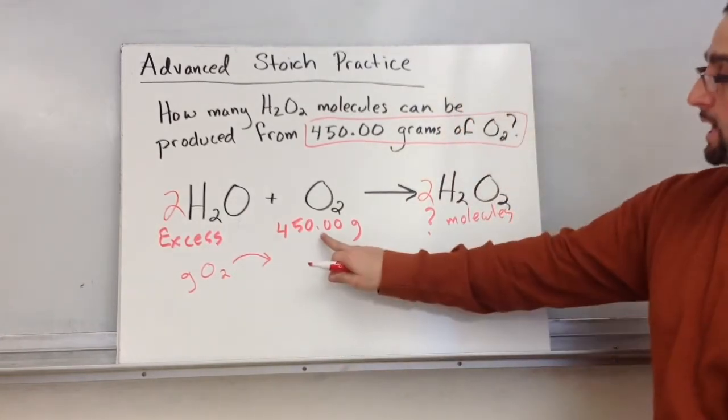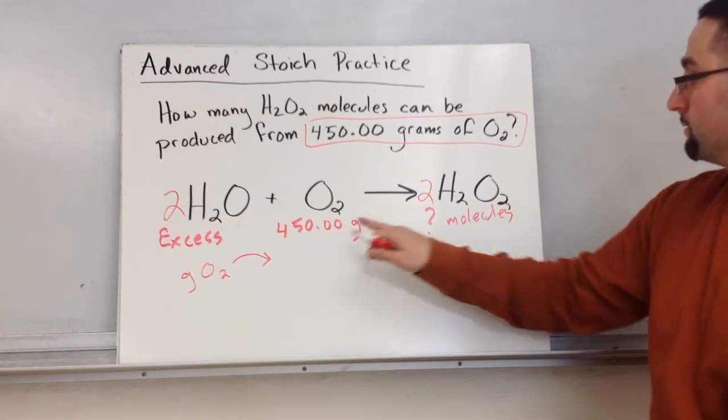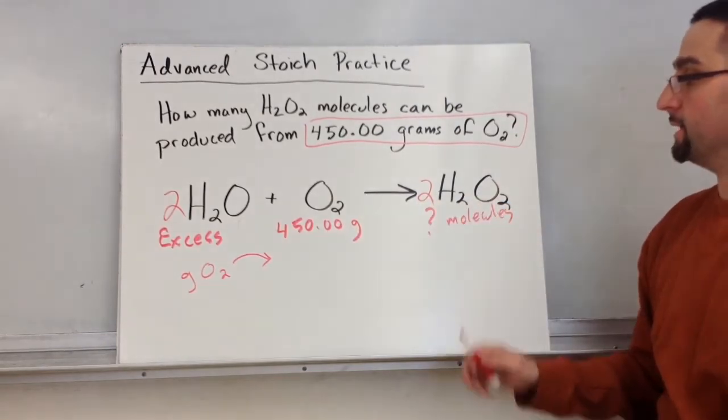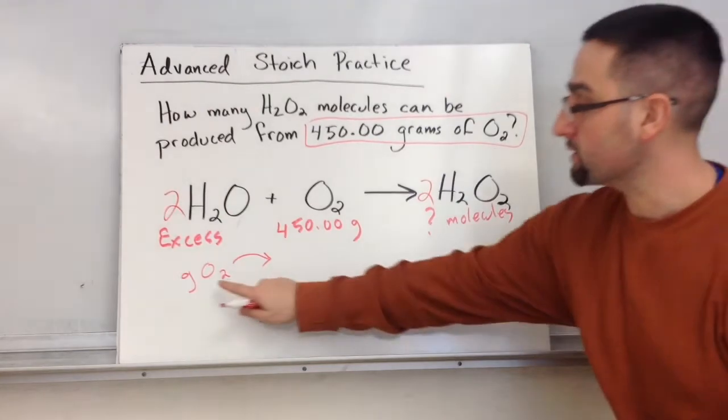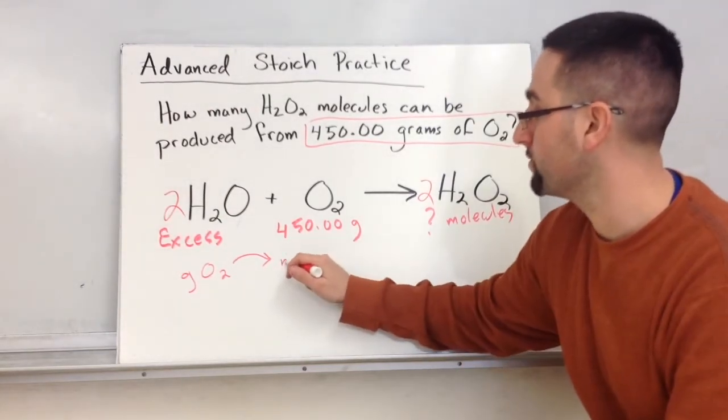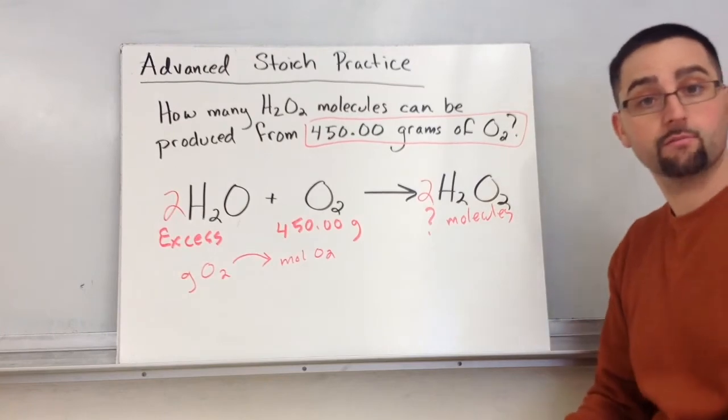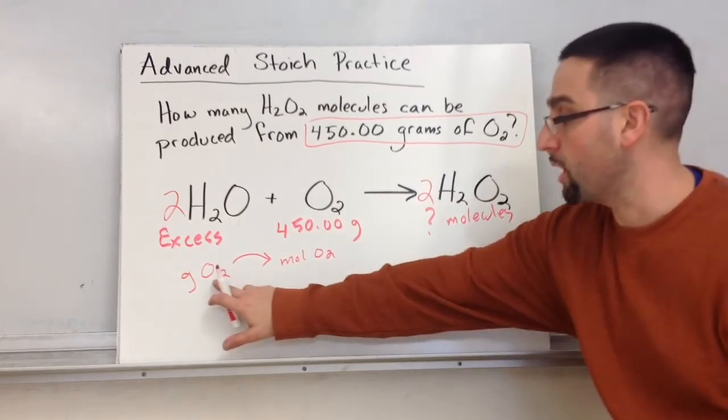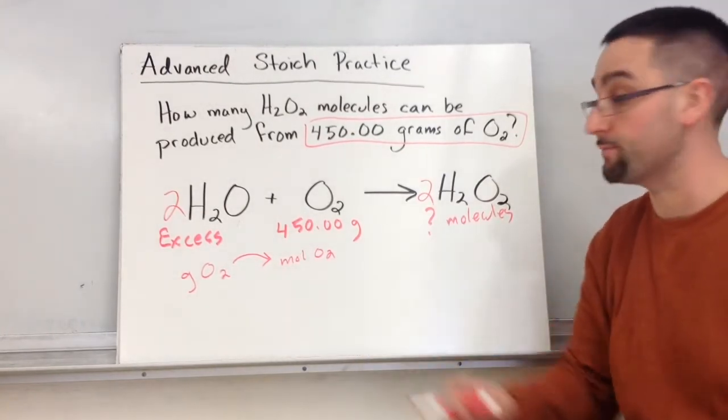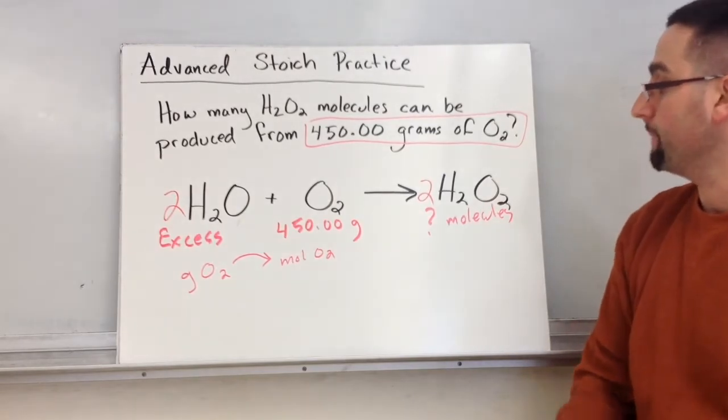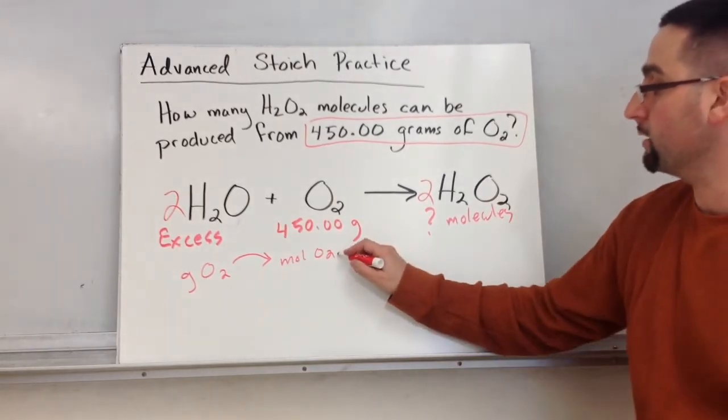The only way that you can compare oxygen to hydrogen peroxide is mole to mole. So let's convert grams of O2 to moles of O2 using molar mass. That's the only way we can make that jump between gram and mole is the molar mass of O2.